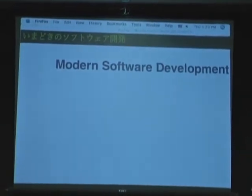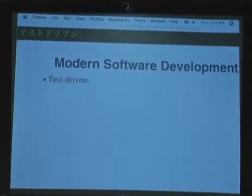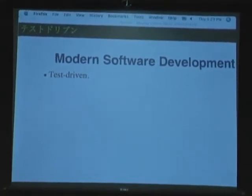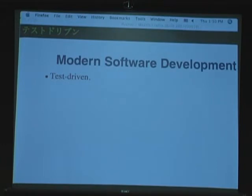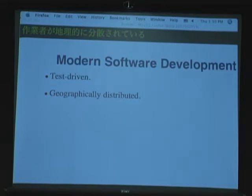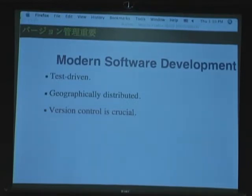So, modern software development — nowadays people write software, a lot of people start using test-driven development. They write tests either before actually writing the code or when they find a bug, to see if the thing is actually working as expected and to prevent regression in the future. And in lots of software companies, they have geographically distributed teams. This makes version control very important because you can use a version control system in a distributed manner — people can work across the continent to commit to the same repository — and you can make sure a particular revision can reproduce a specific bug and verify that you fixed it.